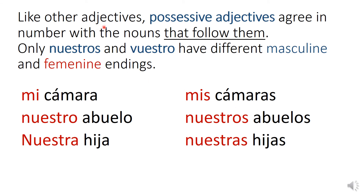Like other adjectives, possessive adjectives agree in number with the nouns that follow them. Only nuestro and vuestro have different masculine and feminine endings. For example: mi cámara, mis cámaras. Nuestro abuelo, nuestros abuelos. Nuestra hija, nuestras hijas.